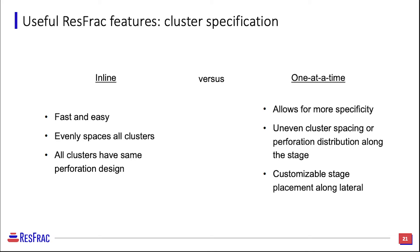Reasons you might use the specify-one-at-a-time table include: a tapered design where perforation distribution along the stage varies, uneven cluster spacing within a stage, or if you had a gap in the lateral because you were porpoising in and out of zone — you can easily place stages on either side of the porpoise and incorporate the entire trajectory. Alternatively, the inline method makes it very fast and easy because you can just type how many perforations per cluster and quickly modify your designs.